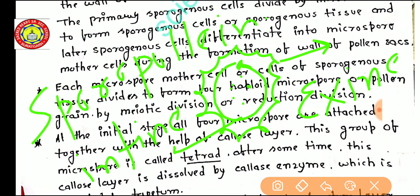When these pollen grains are pollinated and introduced on the stigma of the carpel — if the species is the same, since pollen grain germination and fertilization are species-specific — they get moisture from the stigma and germinate. A pollen tube comes out from the germ pore. On the tip of the pollen tube, one tube nucleus and two male gametes are present. Through the style, the pollen grain migrates into the ovule, where fertilization occurs.